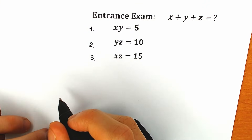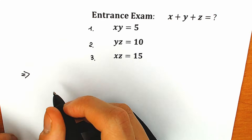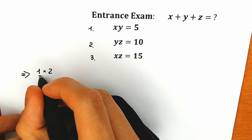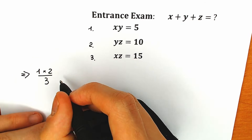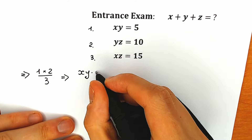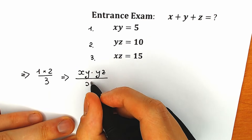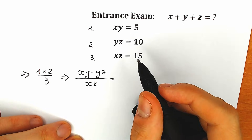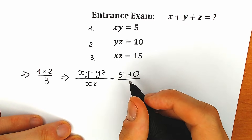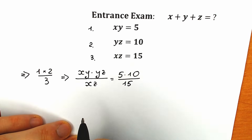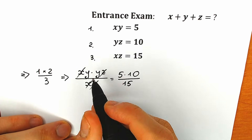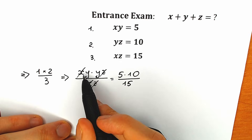Right now I want to consider combinations. For the first combination, let's multiply the first equation times the second equation and divide by the third equation. So we have xy times yz, all over xz, equal to 5 times 10 all over 15. On the left side we can cancel x and x, z and z, leaving only y squared.